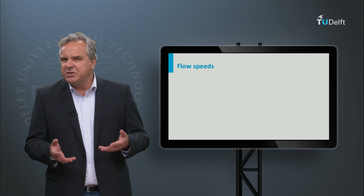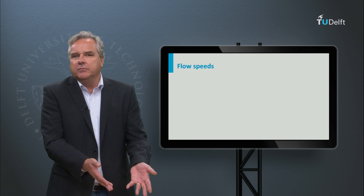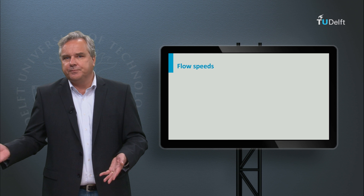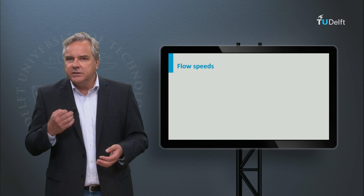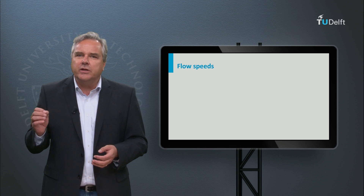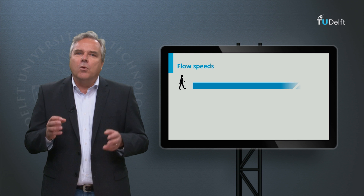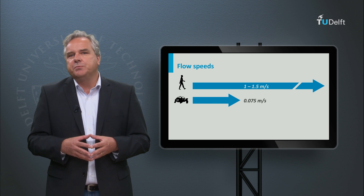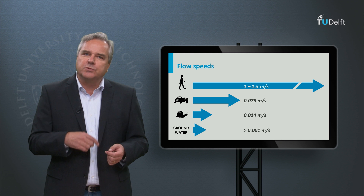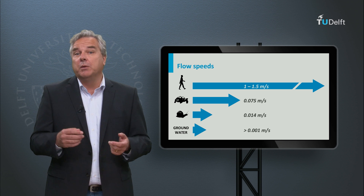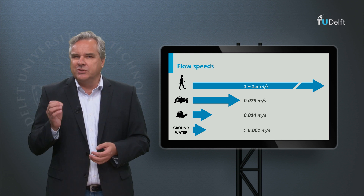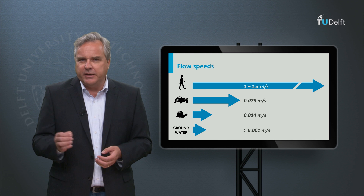Groundwater is a bit mysterious. Why does it not simply run away? Why does it not flow deeper into the ground or to the sea? Actually it does indeed flow down, but it does so very slowly. Water in a river typically flows at a speed of about 1 meter per second. An aquifer that conducts water at a speed of 1 mm per second, or 100 meters per day, is considered a fast aquifer.